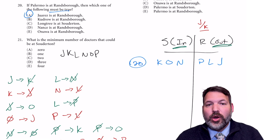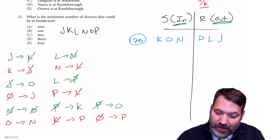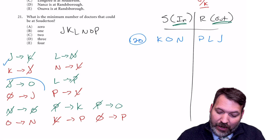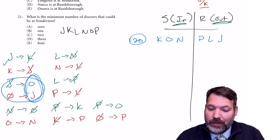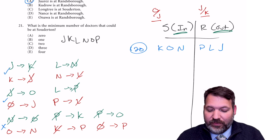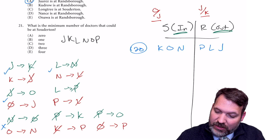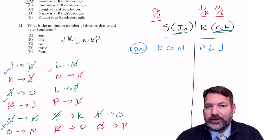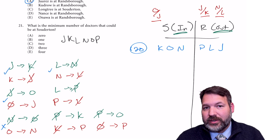We represent that with a placeholder. This placeholder means at least one of J or K goes on the outside — not necessarily only one. This is particularly important for minimum or maximum number style questions, which are common on in-and-out games. The placeholders begin to tell us about the minimum or maximum number of elements on either side. As a shortcut, the placeholder always goes where the conditional statement ends.